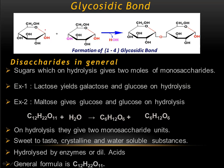In maltose, two glucose units are involved. This is the first carbon of the first sugar, glucose. For glucose, the functional group is present at C1 carbon. The functional group is present at the first position for both sugars. These are in the alpha configuration because the functional group at C1 carbon is present below the plane of the ring.